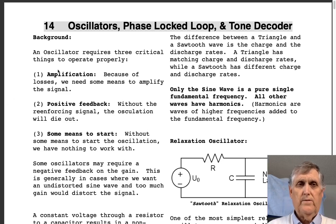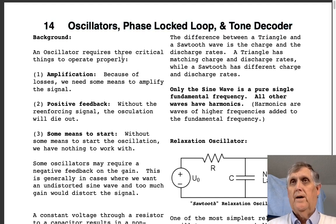Alright, we're going to, we are now into week nine, chapter 14: oscillators, phase lock loop, and tone decoder. For this particular chapter, which is 12 pages long, I'm going to break it into four parts, so three pages for each part, so each video does not end up being too long.